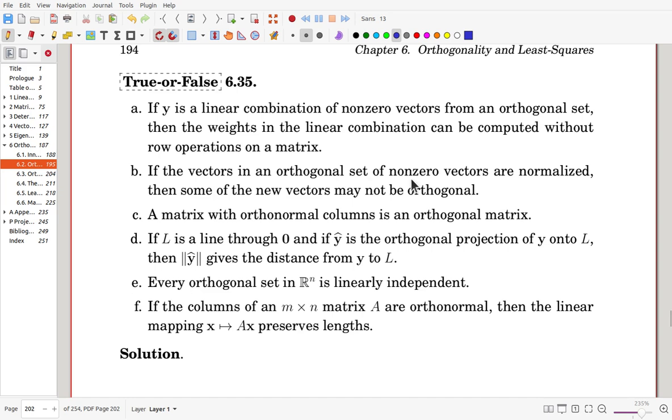If the vectors in an orthogonal set of non-zero vectors are normalized, then some of the new vectors may not be orthogonal. Is it true? Once an orthogonal set of non-zero vectors are normalized, then again the resulting set must be orthogonal, in fact orthonormal after normalization. So that part is wrong.